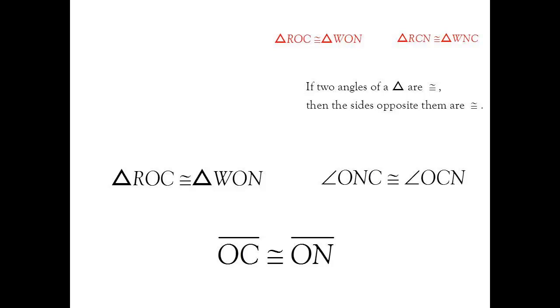Well, one route would be to show that triangle ROC is congruent to triangle WON, which is what we tried a moment ago and it didn't really lead us anywhere. Another option would be to look at what else those angles belong to and show, for example, that triangle RCN and triangle WNC are congruent. So let's try that and see where it leads us.